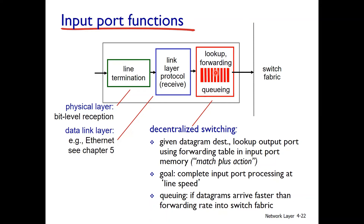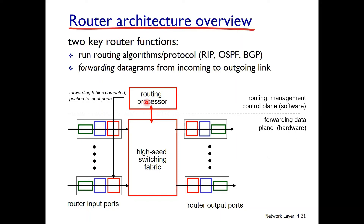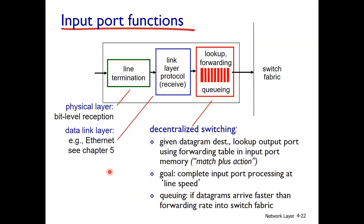When the forwarding is centralized, the routing processor handles everything. In decentralized switching, the forwarding table copy at each input port allows the port to determine the output port locally. The goal is to complete input port processing at line speed.